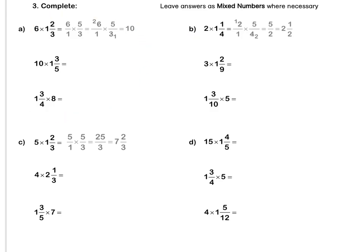Question B: we rewrite 2 as 2 over 1 and 1 and one quarter as five quarters. We simplify in our question to get 5 over 2, which is 2 and a half as a mixed number. Press pause to complete question B.